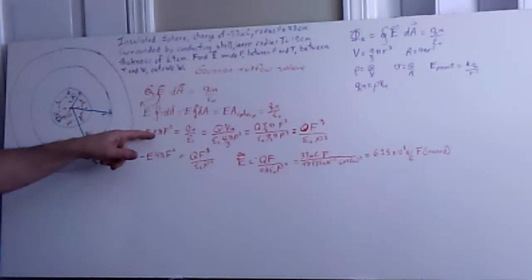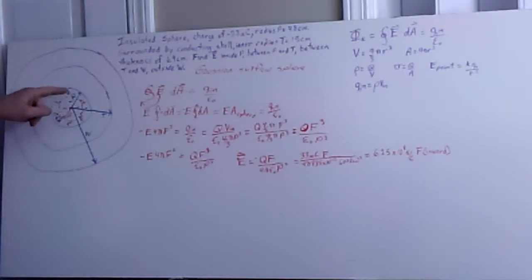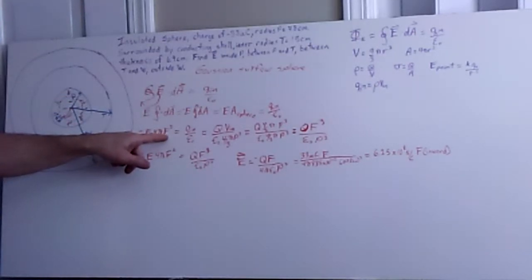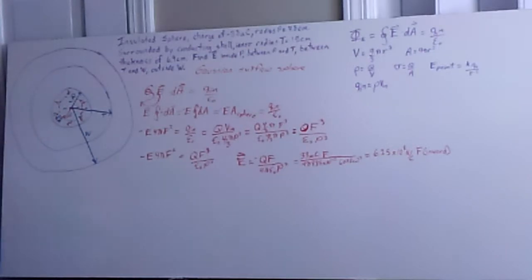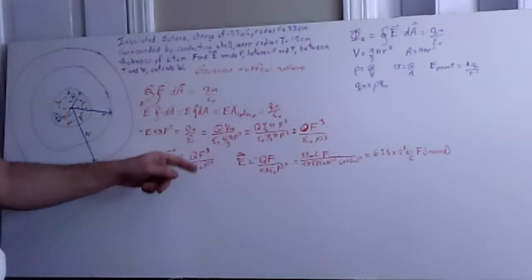So we go ahead and put in the equation for the area of our Gaussian surface, and that's just 4 pi f squared, since f is the radius of the Gaussian surface that we've highlighted here in red, and set that equal to q in divided by epsilon zero.